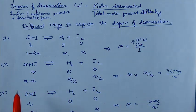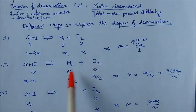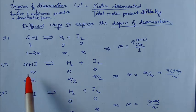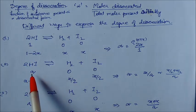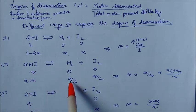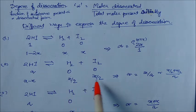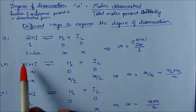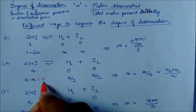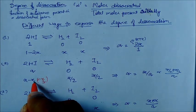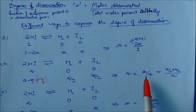Similarly, for 2HI ⇌ H₂ + I₂, if we take initial moles as 'a', we can write the equilibrium moles as: H₂ = x/2, I₂ = x/2, and 2HI = a minus 2·(x/2) = a minus x. So alpha = x/a.